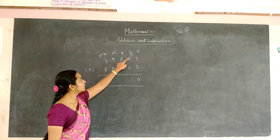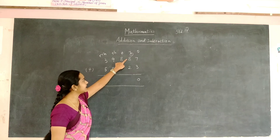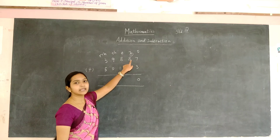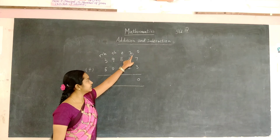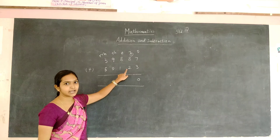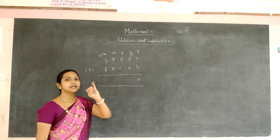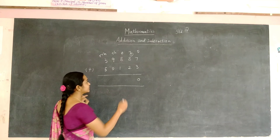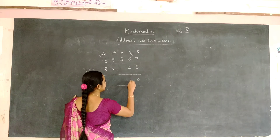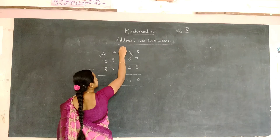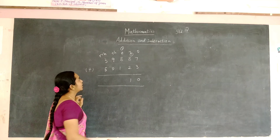You have to add 1, 8, and 2. 8 plus 1 will be 9. After 9 you have to add 2, that is 10 and 11. So write 1 here and 1 will be carried out to the 100's place.